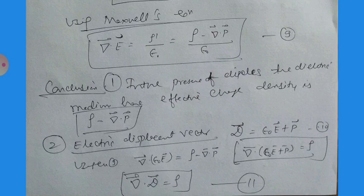The important conclusion is that in the presence of dipoles in a dielectric medium, the net charge density is ρ_eff = ρ_f - ∇·P, where ρ_f is the free charge density and P is the polarization. This can be treated in terms of dipole contributions since dipoles play the major role. This completes our discussion of dipoles in dielectric media. Thank you very much.